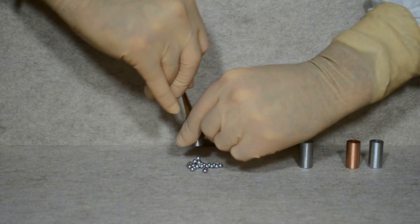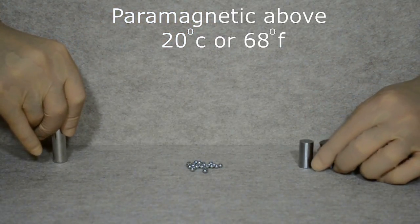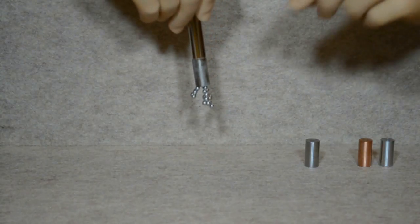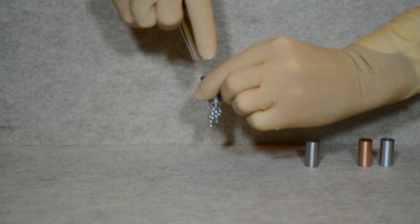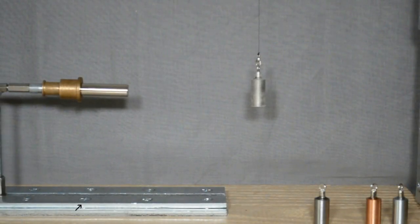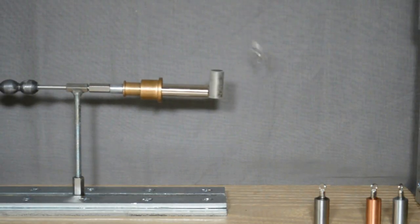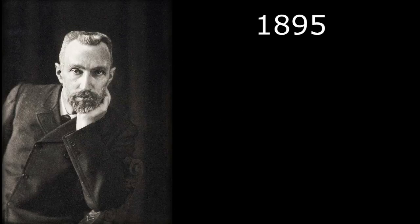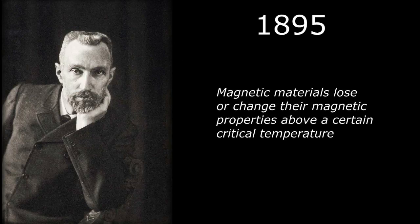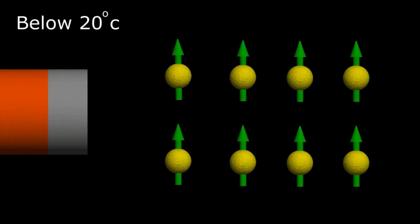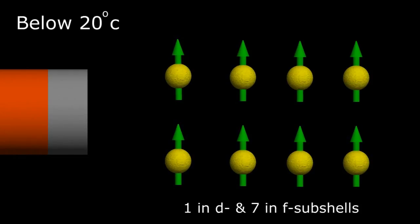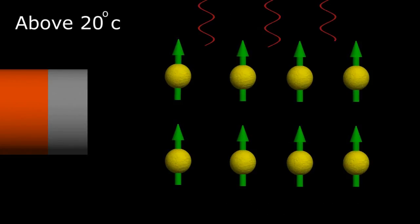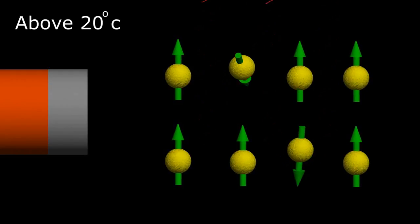While the gadolinium is attracted to the fixed magnet, the cylinder is only weakly attracted to the steel BBs — tenting towards the cylinder but too weak to lift the BBs off the platform. But gadolinium is only paramagnetic at temperatures above 20 degrees Celsius or 68 degrees Fahrenheit. If we cool the gadolinium cylinder in the freezer, we can actually change its magnetic properties. The metal now acts ferromagnetic, picking up all the steel BBs and maintaining its strong magnetism without direct contact to the fixed magnet. This phenomenon demonstrates the Curie ferromagnetic point of gadolinium, named after Pierre Curie, who in 1895 discovered that magnetic materials lose or change their magnetic properties above a certain critical temperature.